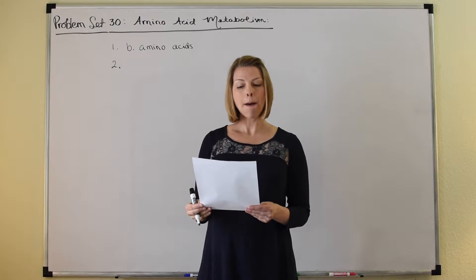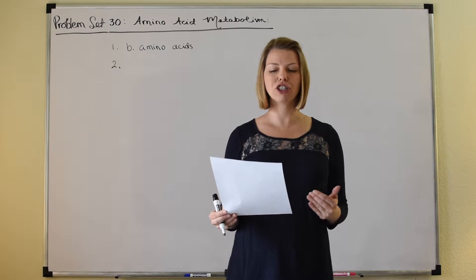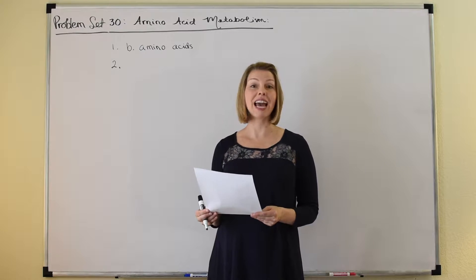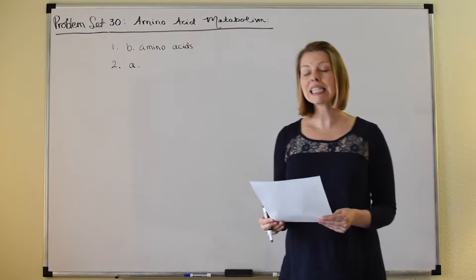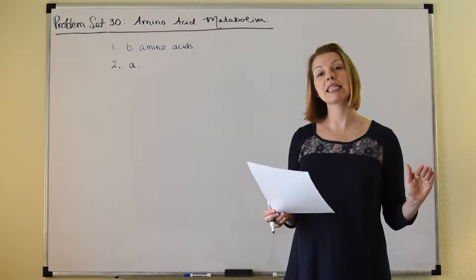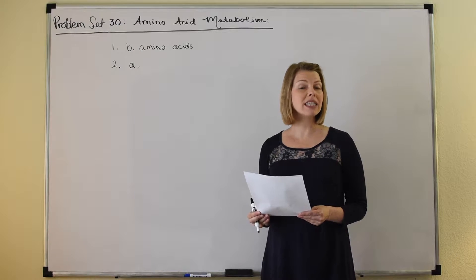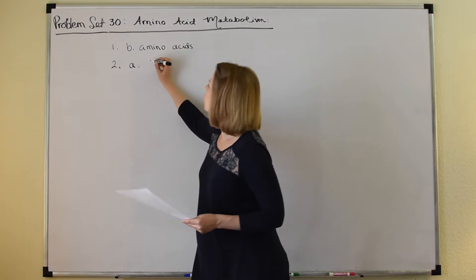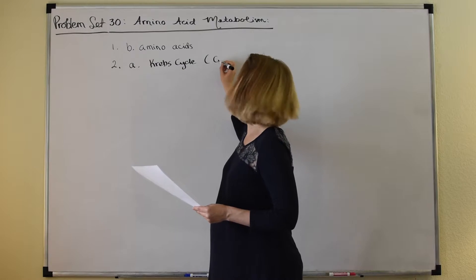Number two, you have to come up with a name for processes A through D based on the description. For A, the description is an eight-step cycle in which two carbons enter as acetyl coenzyme A and two carbons exit as carbon dioxide. Hopefully you can recognize that as the Krebs cycle, or the citric acid cycle — two ways to say the same thing.